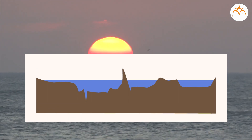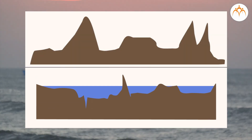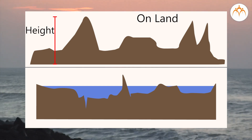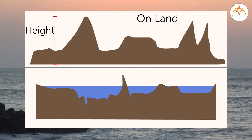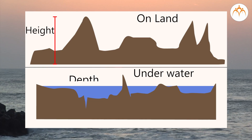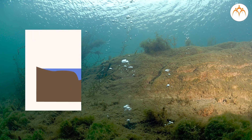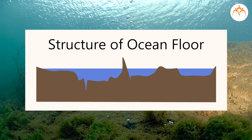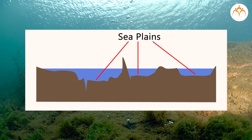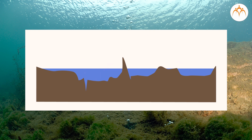The classification on land is done by considering the heights of the landforms, whereas the different structures under the water are classified by their depths. These are known as the structures at the ocean floor. The description is based on the depth of the structures found at the floor of the ocean. There are plains in large numbers and also depressions. These changes in landforms are evident as one enters the sea from the sea level.